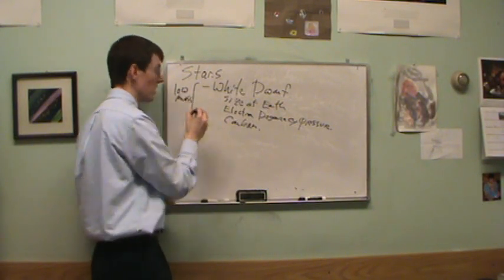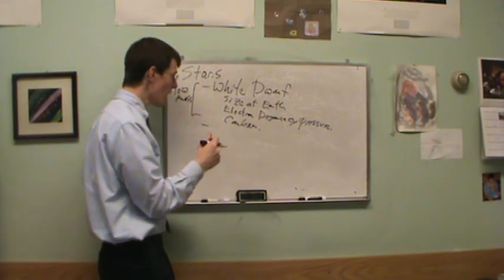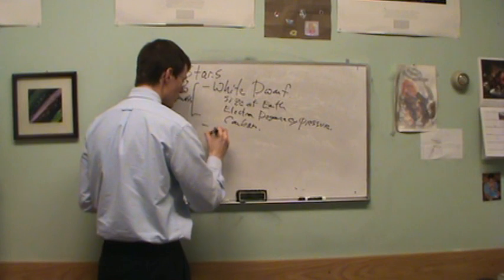If you're a high mass star, five, six, seven, ten times the mass of the Sun, now you're going to end in a supernova and create a neutron star.